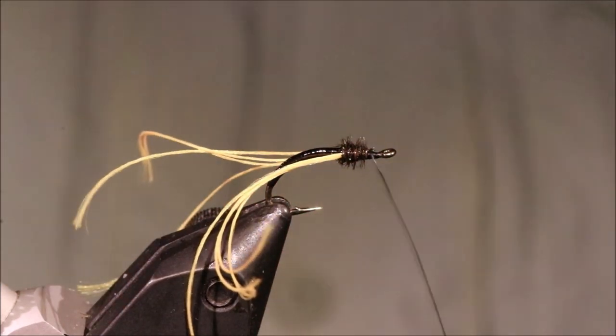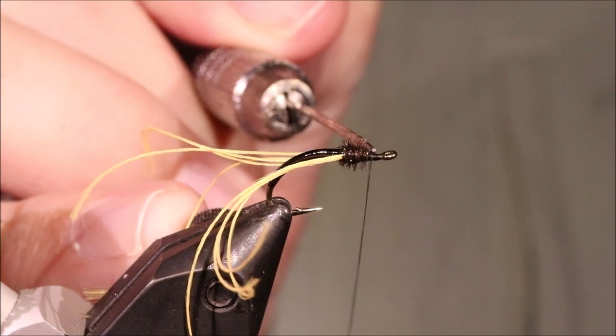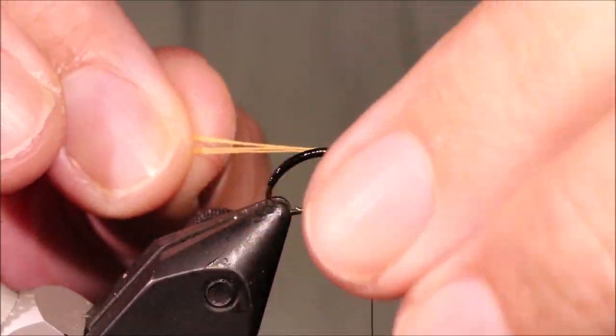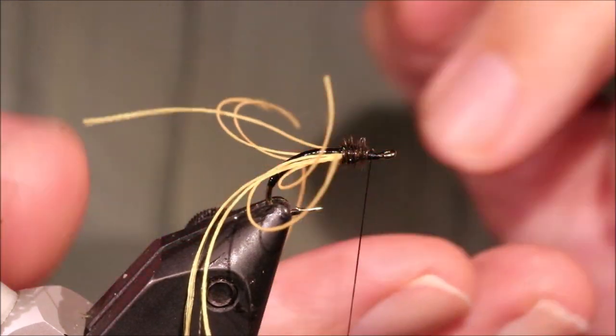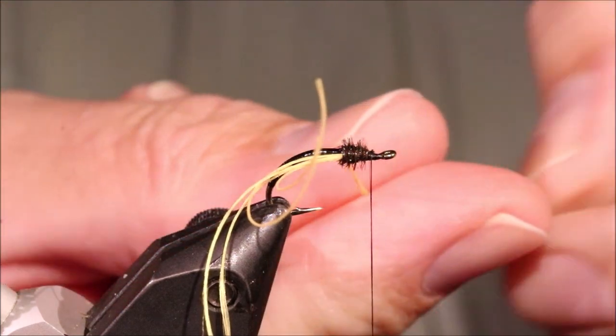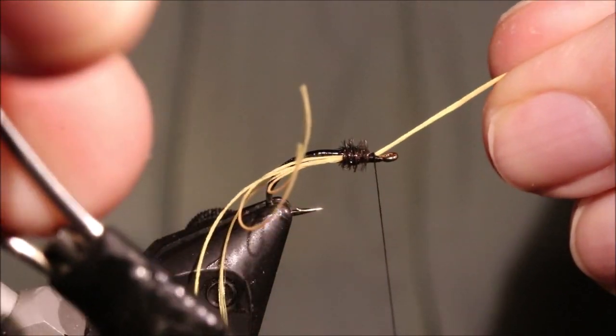Come across your thread and tie it off, and you can hopefully see I've still left an eye and a half length behind the eye of the hook there clear. Grab my four strands of Glowbrite, you can brush them together if you want I'm not bothered.